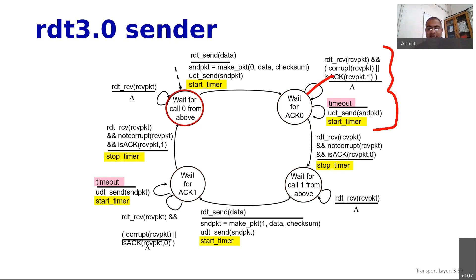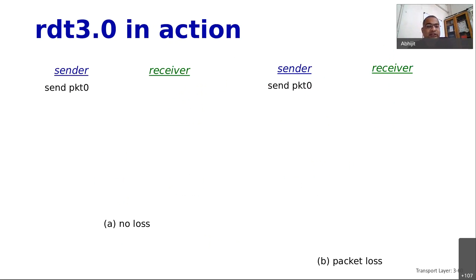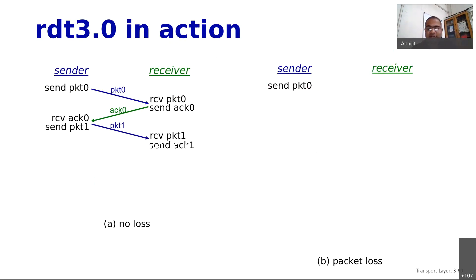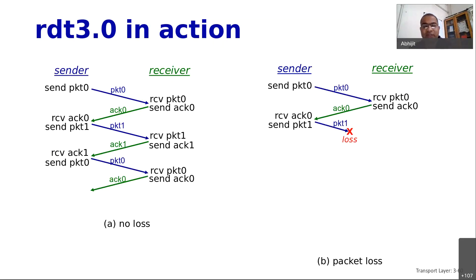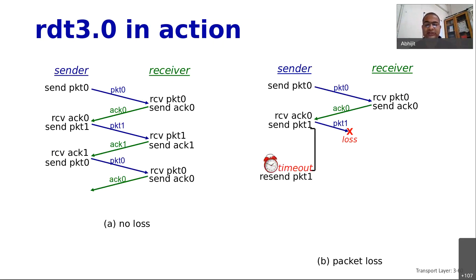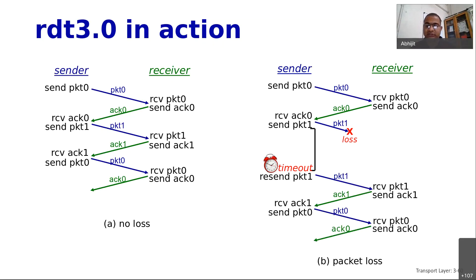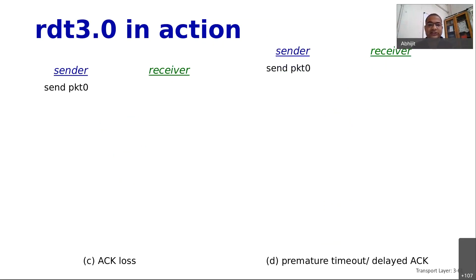Let's see RDT 3.0 in action. In the normal scenario: sender sends packet 0, receiver sends ACK 0, sender sends packet 1, receiver sends ACK 1 — everything works perfectly. In a loss scenario: packet 0 is received and ACK 0 comes back, but packet 1 is lost. The sender has started a timer for packet 1; when the ACK does not arrive in time the sender times out and resends packet 1. Hopefully it reaches and the receiver acknowledges, and things continue.